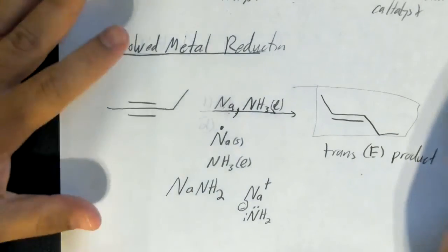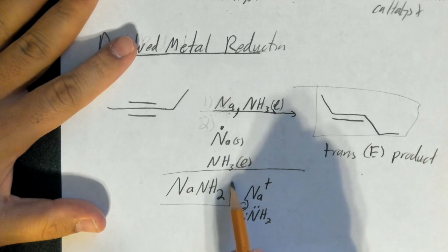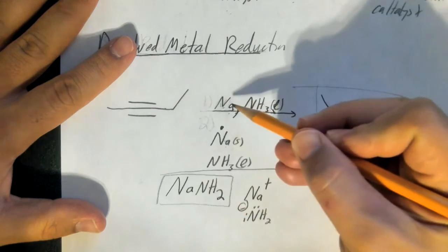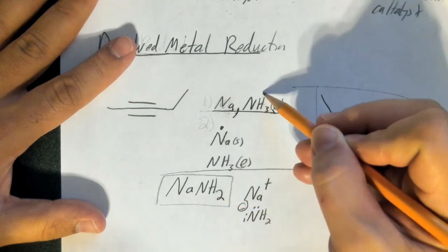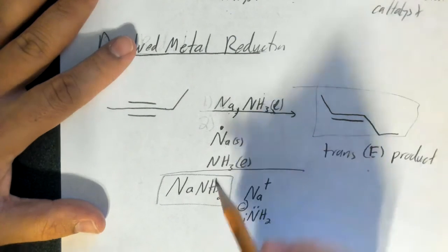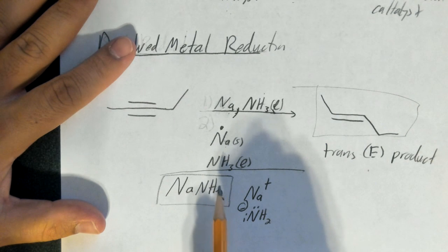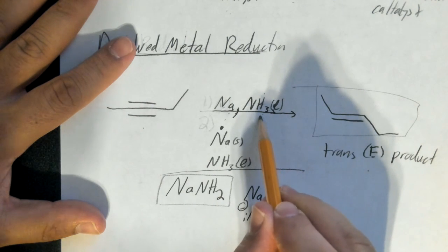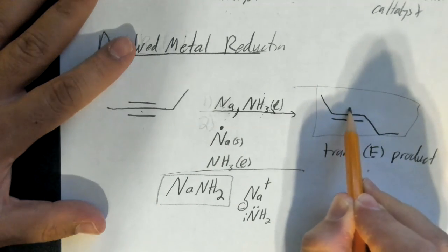So the main thing for now is be sure not to confuse the strong, very strong base sodium amide for sodium dissolved in ammonia. They cause two different types of reactions. If you recall from our previous lectures, sodium amide very often is used for eliminations and double eliminations to make alkynes. Sodium with ammonia is used to reduce alkynes to alkenes.